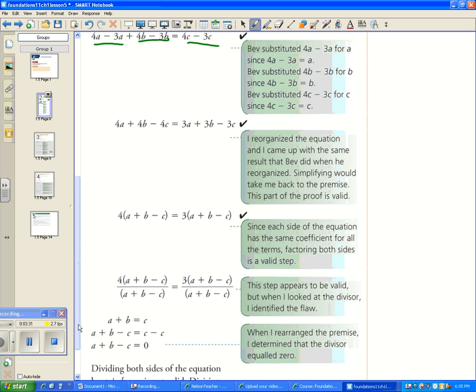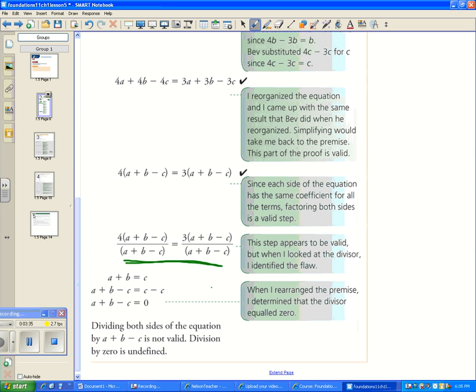Now let's look at this next step where he divided, and this is where Prue notices a mistake. He says, wait a second, a plus b equals c was our premise. If we subtract c from both sides, we get a plus b minus c is equal to zero. So in other words, in this step he divided both sides of his equation by zero. Dividing by zero is undefined. Remember every math teacher says do not divide by zero. That is what Bev did here.